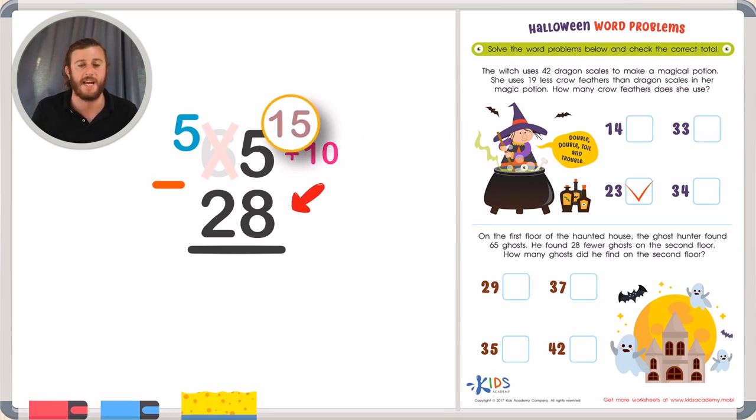Now we can just subtract 15 minus 8. 8, 9, 10, 11, 12, 13, 14, 15. 15 minus 8 is 7.